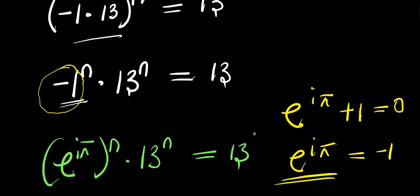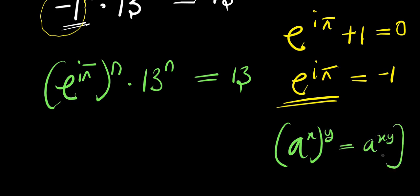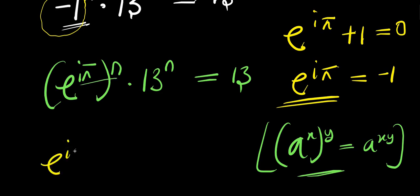The next thing we are going to do is apply the identity: if you have e to the power x, raised to the power of y, this equals e to the power x times y. So we apply this identity and multiply the exponents. We have e to the power i times pi times n, times 13 to the power n, equals 13.